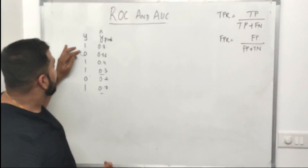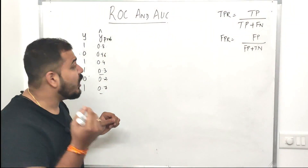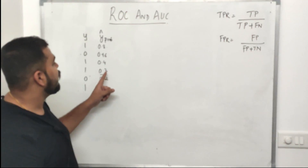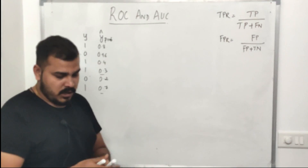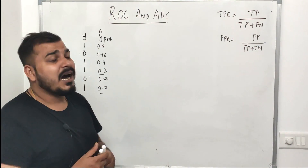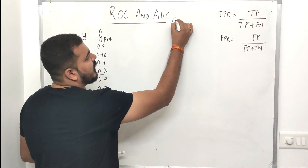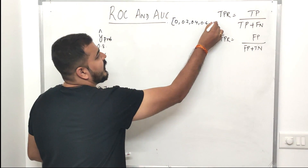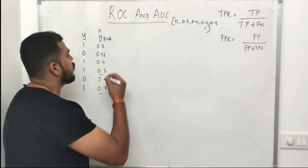Let us take an example. I have my actual output values y as: 1, 0, 1, 1, 0, 1. My model has predicted probabilities like 0.8, 0.96, 0.4, 0.3, 0.2, 0.7. For constructing the ROC and AUC curve we will consider threshold values: 0, 0.2, 0.4, 0.6, 0.8, and 1.